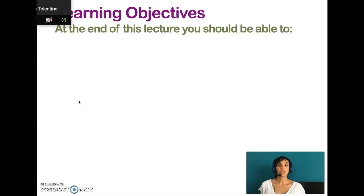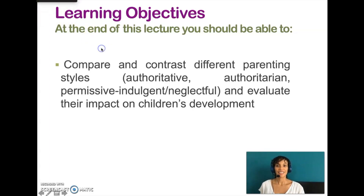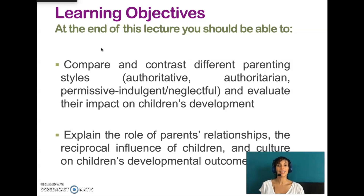Finally, some learning objectives. At the end of this mini-lecture screencast, you should be able to compare and contrast different parenting styles — authoritative, authoritarian, permissive indulgent — and evaluate their impact on children's development. You should also be able to explain the role of parents' relationships, the reciprocal influence of children, culture, and socioeconomic status on children's developmental outcomes. That's it for now, everybody — catch you on the next mini-lecture.